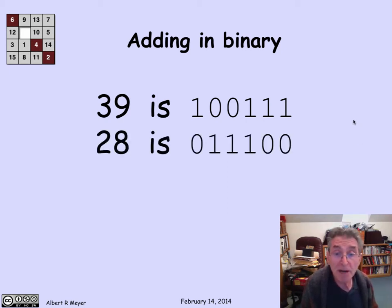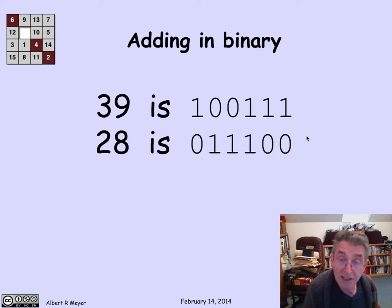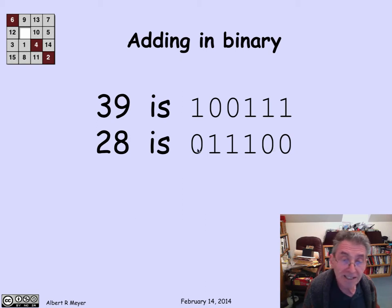Likewise, the binary representation of 28 is 0, 1, 1, 1, 0, 0. You can check how that works with contributing 1, 2, 4, 8, 16, and 32.